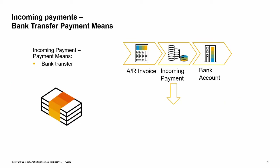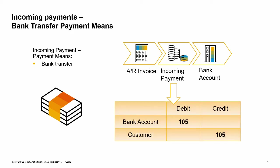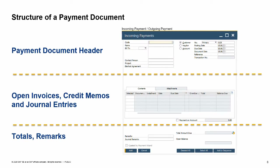Another option for the payment means is bank transfer. When a customer pays using the bank transfer payment means, the transaction does not involve a clearing account — the customer transfers the payment directly to your house bank. Here we see the debit to the house bank account and the credit to the customer account. The windows for incoming and outgoing payments are almost identical. The window is divided into the following parts: the document header area on the top, the area for selecting open invoices, credit memos, and journal entries and for assigning payment amounts in the middle, and the area for entering remarks and displaying totals at the bottom.